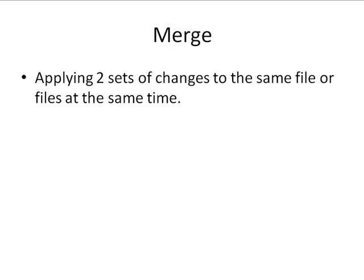The next term is merge, and merging is applying two sets of changes to the same file or files at the same time. So let's say you check out a repository, make some changes, and then update from the repository again to make sure you have the latest version of the files. But let's say at the time you were working, someone else was also working on changes to the same files and committed those changes.